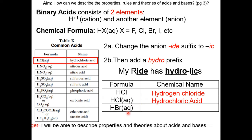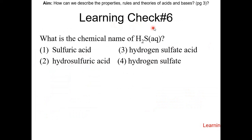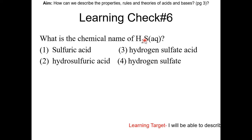HBr(aq) is also an acid but is not on Table K — we can still figure it out: this is hydrobromic acid. Learning check number 6: what is the chemical name of H2S(aq)? This is considered an acid. You change sulfide to sulfuric and add hydro- in front. So the answer is choice 2 — hydrosulfuric acid.